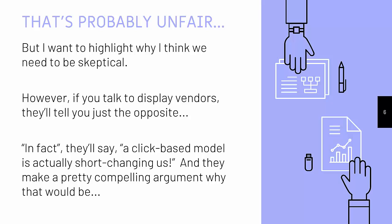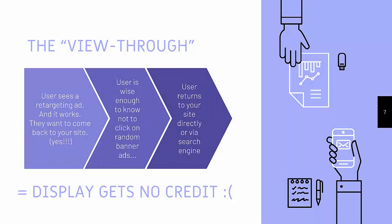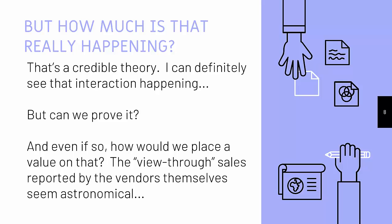However, if you talk to retargeting vendors or any display vendors, they'll tell you just the opposite. They'll say they're actually getting short shrift from click-based attribution models, and they make a fairly compelling argument why. They will talk to you about the view-through interaction — where a user sees a retargeting ad or a display ad, and it works, it makes them want to come back to the site. But they are smart enough to not just be clicking on random banner ads they see around the internet. So they come to your site via the address bar or a Google search. And when that happens, your display channel gets no credit in an attribution model. So they say that's short-changing them. But how much is that really happening? I'm a data person. I want to actually be able to see it happening, and even if we can verify that these are happening, how can we put a value, a number on them?